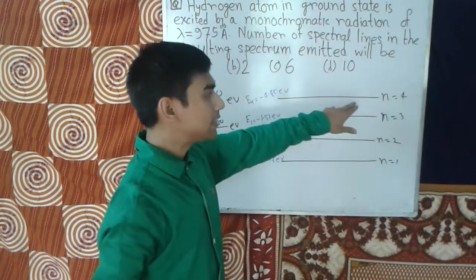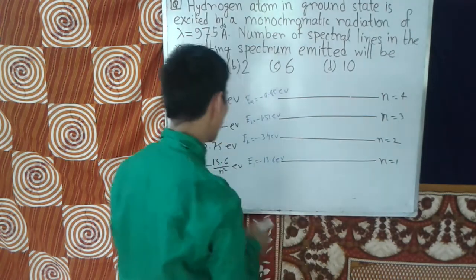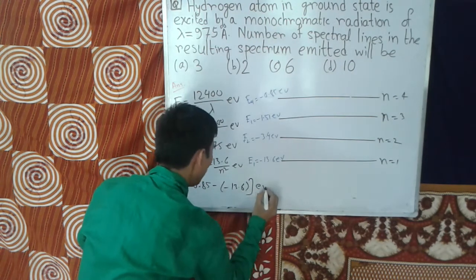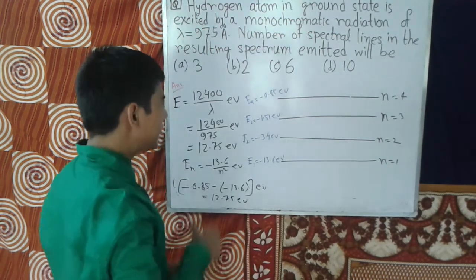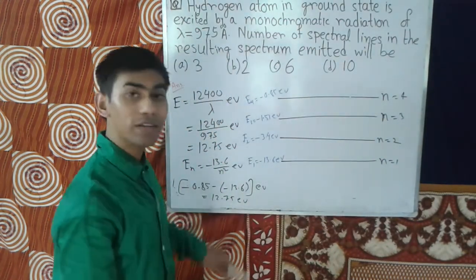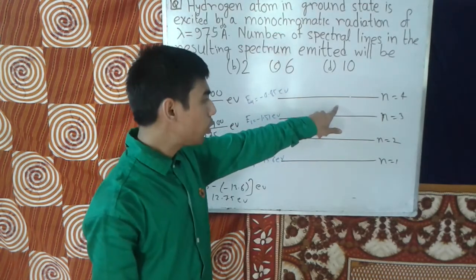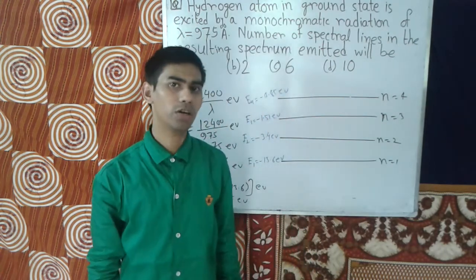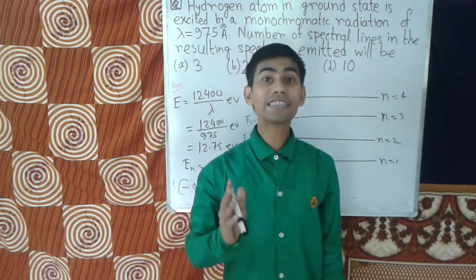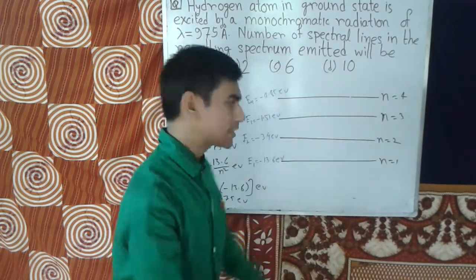Now we see that the energy gap between the n equals 4 and n equals 1 level is: minus 0.85 minus of minus 13.6 electron volts, which equals 12.75 electron volts. This is exactly equal to the energy of the photon. So the electron is excited from n equals 1 to n equals 4.